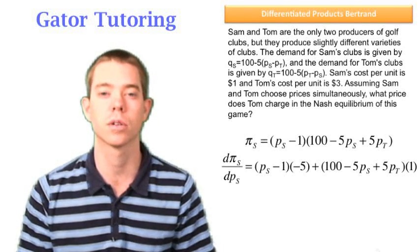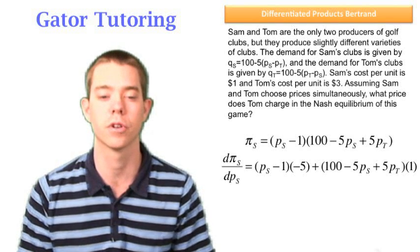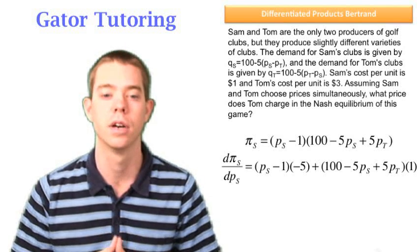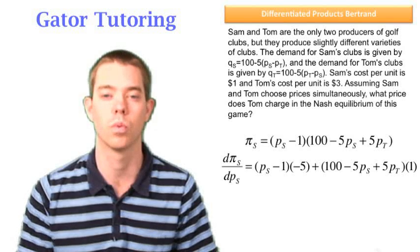We're going to take the derivative using the product rule, which is the first times the derivative of second, plus second times the derivative of first. First, PS minus 1 times the derivative of the second thing is just negative 5, plus the second thing times the derivative of the first thing, which is just 1 in this case.